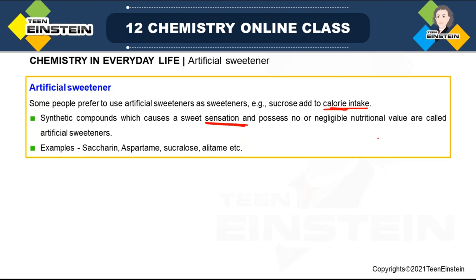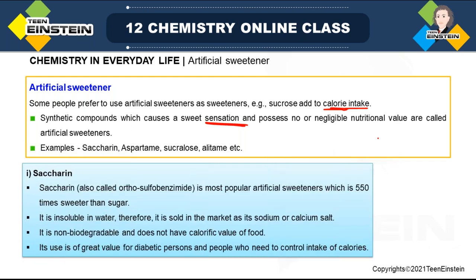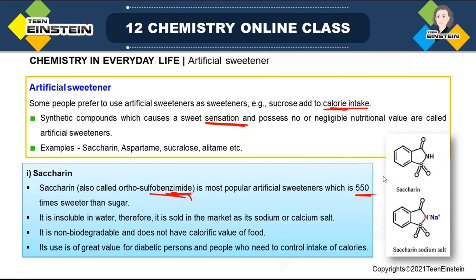Under artificial sweetener, different examples are saccharine, aspartame, alitame, etc. The first one is saccharine, also known as ortho-sulfobenzoic acid imide. If you look at the structure it will be clear why the name is so — in the ortho position of benzene ring, there are two groups connected to each other. This is the most popular artificial sweetener and it is 550 times sweeter than sugar. The structure has CO, NH, then SO₂ group — it is ortho-sulfobenzoic acid imide.